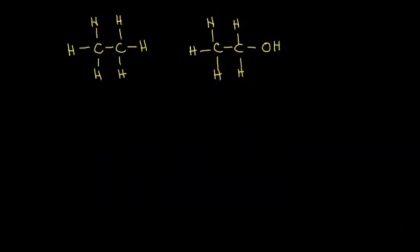Let's start with physical properties of alcohols. We're going to compare alcohols to alkanes. This alkane on the left has two carbons, so this is ethane. On the right, if we take off one of those hydrogens and replace it with an OH, we have ethanol.